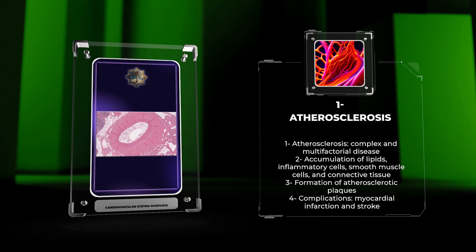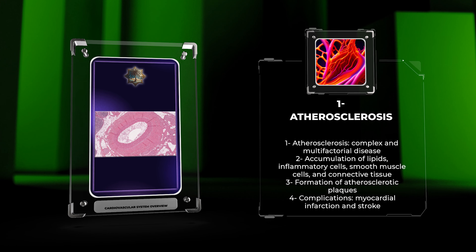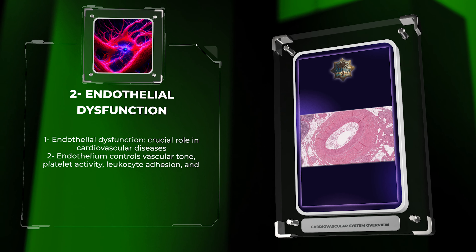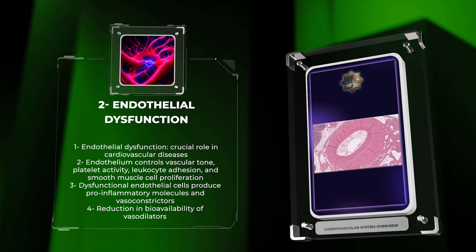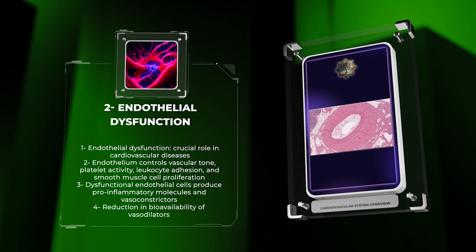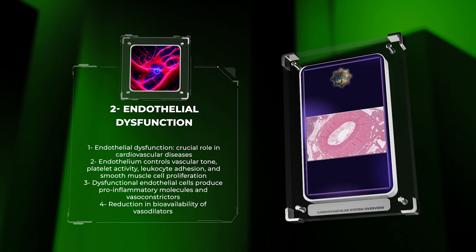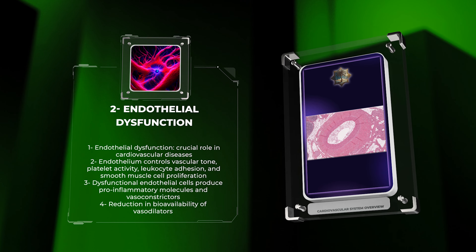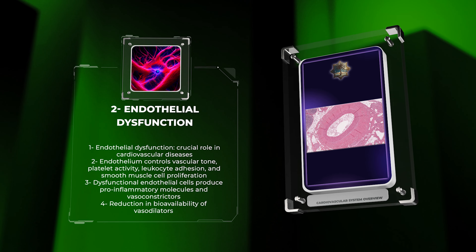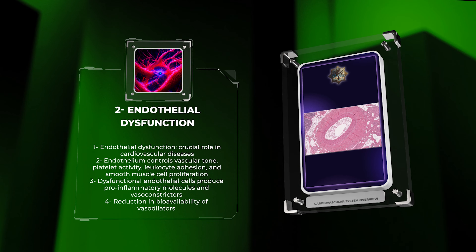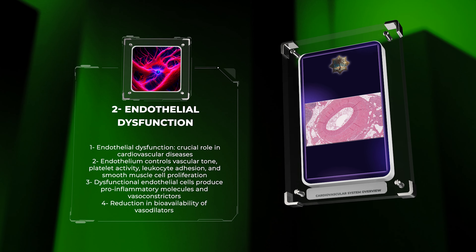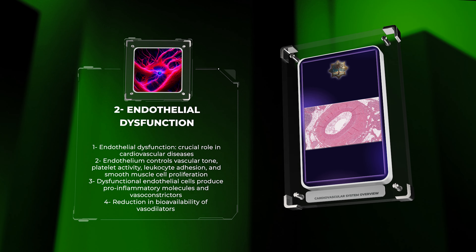The process of atherosclerosis initiates with damage to the endothelial lining of blood vessels, triggering an inflammatory response. Endothelial dysfunction plays a crucial role in cardiovascular disease progression. The endothelium controls vascular tone, platelet activity, leukocyte adhesion, and smooth muscle cell proliferation. Dysfunctional endothelial cells produce pro-inflammatory molecules, vasoconstrictors, and reduce the bioavailability of vasodilators such as nitric oxide.